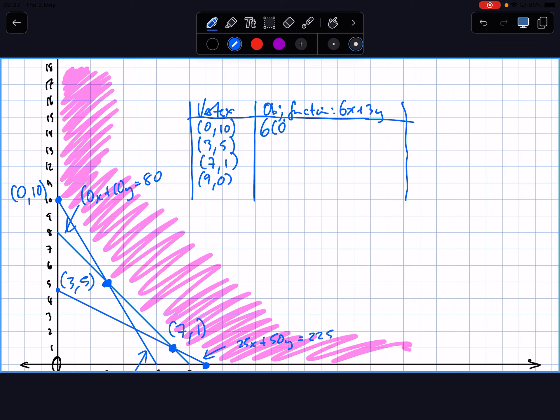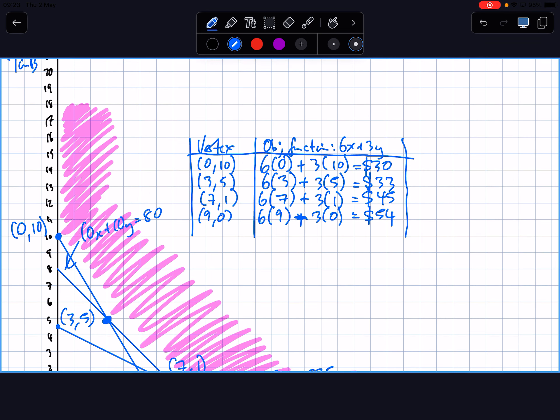Do the maths. 6 lots of 0 plus 3 lots of 10 that's $30. 6 lots of 3 plus 3 lots of 5, 6 times 3 is 18, 18 plus 15 equals 33. So that's a bit more expensive. 6 lots of 7 plus 3 lots of 1, 6 times 7 is 42, equals 45. So that's more expensive. Last one 6 lots of 9 plus 3 lots of nothing equals 54.